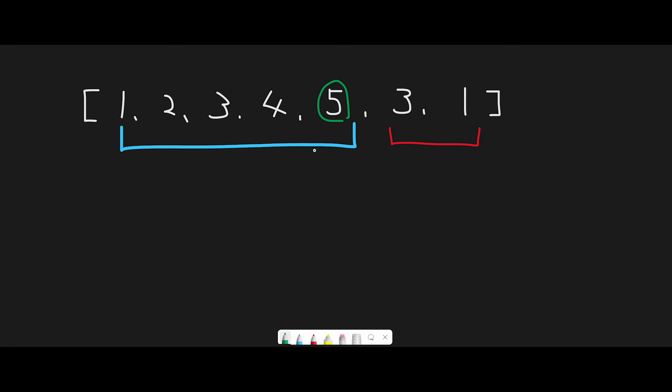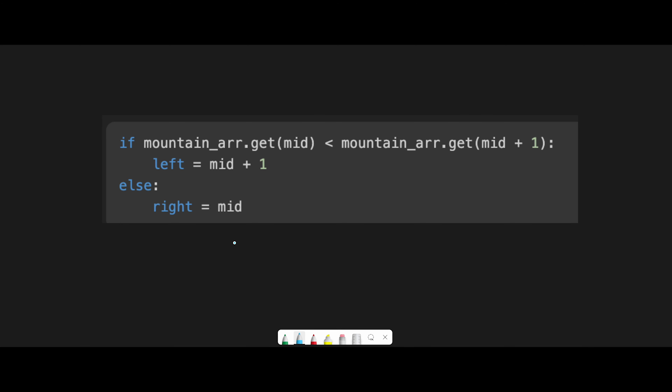If we find the target in the increasing part, we don't need to search the decreasing part. We can find the target with the minimum index by searching the increasing part first, because the minimum index of the decreasing part is always greater than the maximum index of the increasing part. This handles cases with duplicate target numbers.